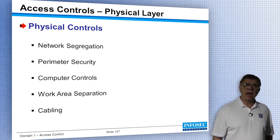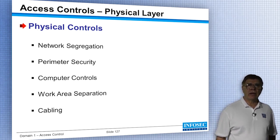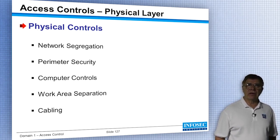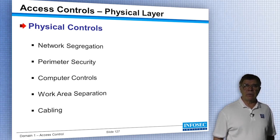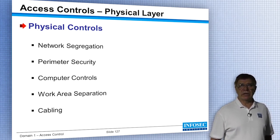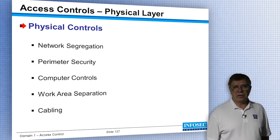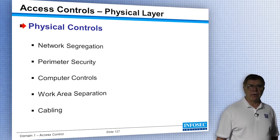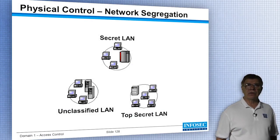Work area separation is another physical control — for example, a state agency sharing a physical building with a federal agency, where you must pass through the state agency area to reach a private door for federal employees only, with their own internal man trap. Keeping cables physically separate is also a physical control. These are all types of physical controls.